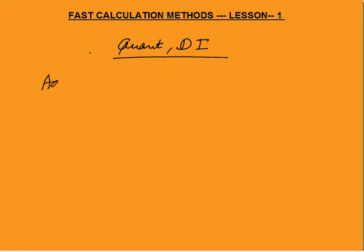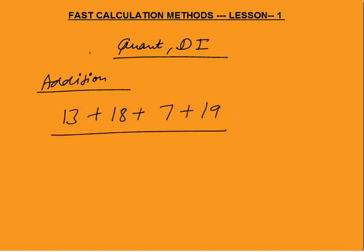The first thing you will learn is addition — how to add numbers in a faster manner. The first thing you need to learn is how to add two-digit numbers verbally. For example, if you need to add 13 plus 18 plus 7 plus 19, how will you add this verbally? You have to add this without writing.